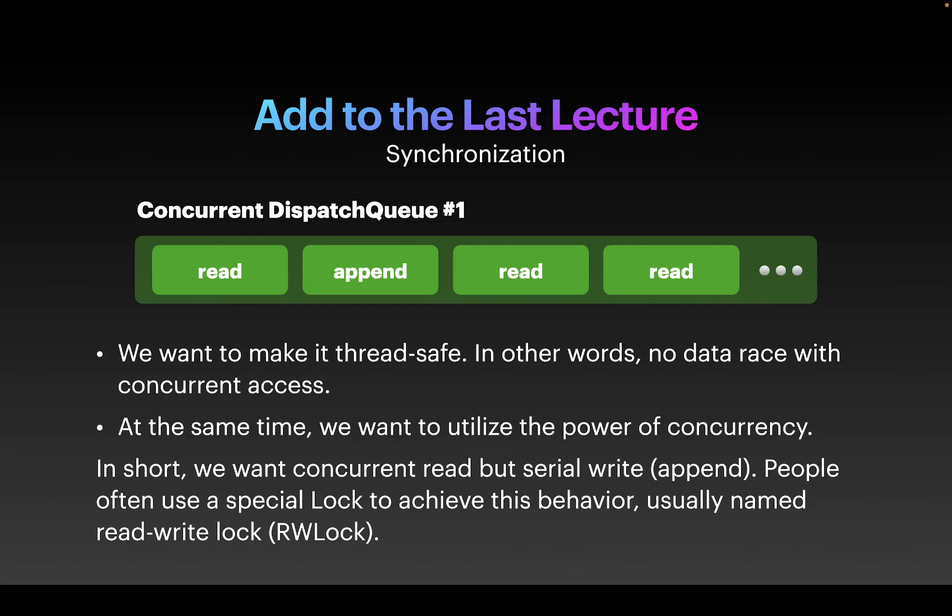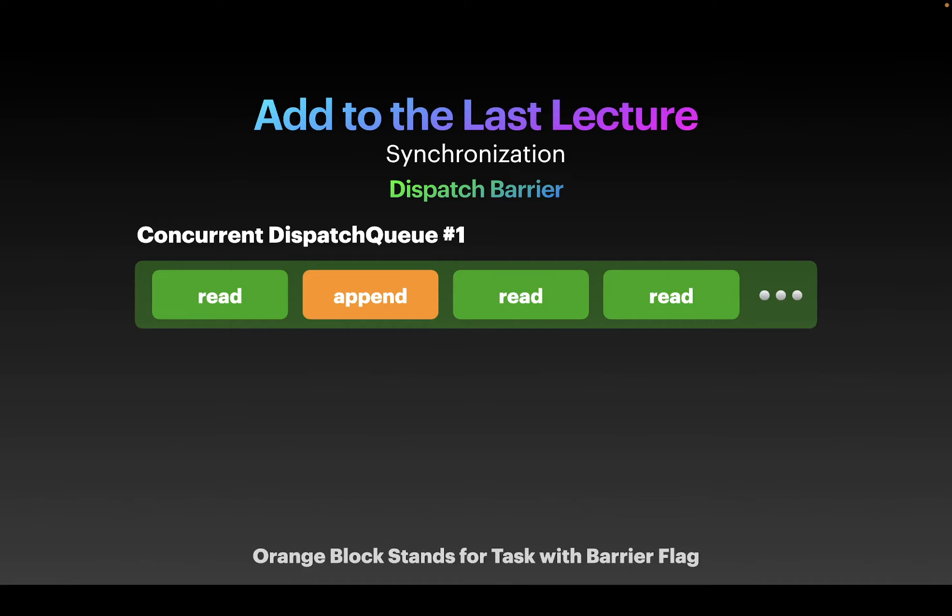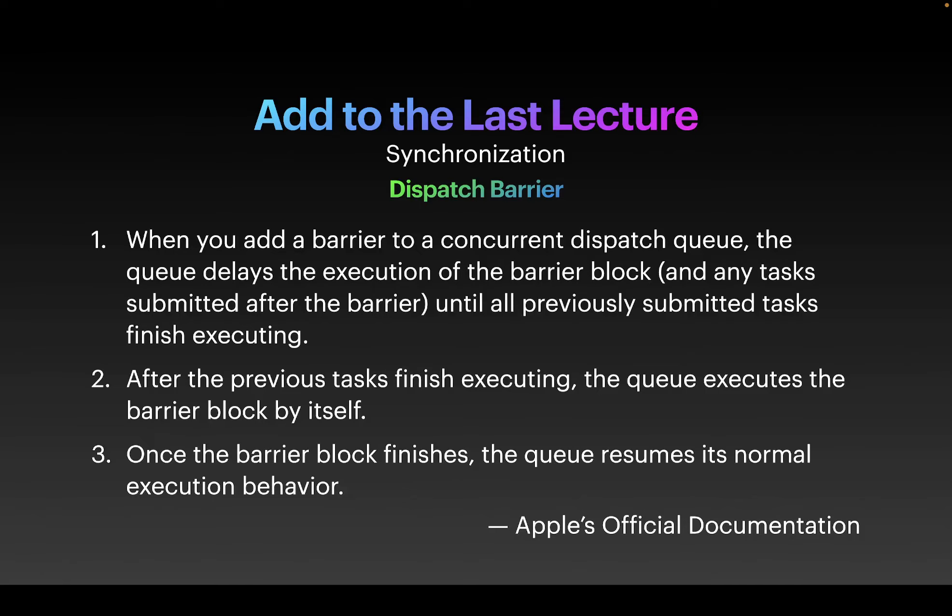This brings us to a new concept: the dispatch barrier. The orange blocks represent tasks with a barrier flag — meaning we want to make that task act as a barrier. We have three regular read operations as normal tasks, and the append operation is going to act like a barrier. All write operations are marked as barriers. Let's explore what barrier behavior means.